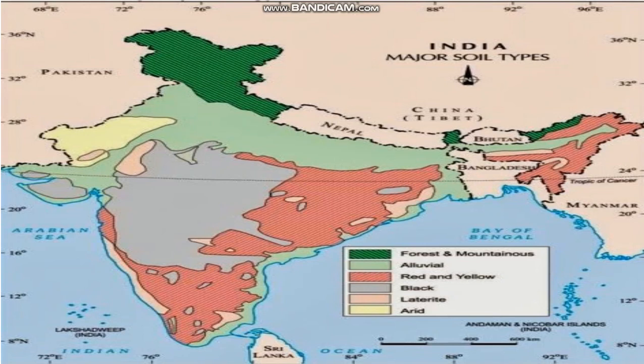First is alluvial soil. In the map you are looking at the light green color — this is alluvial soil. It is found over a large part of the area and is mainly formed by the deposition of sediment by rivers. It is commonly found in the northern and coastal plains, and this soil is very fertile because most agricultural activities are done with the help of this soil.